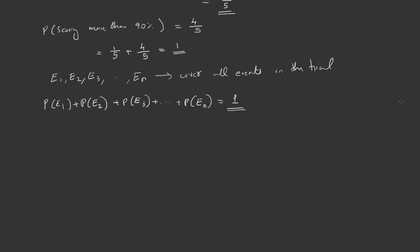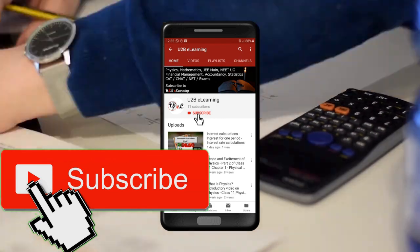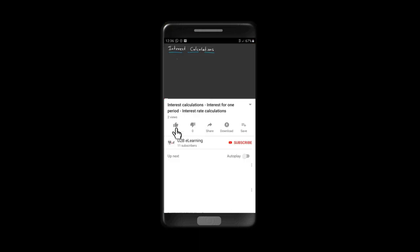So in this video, we completed the whole theory part for Class 9 Mathematics, Chapter 15, Probability. Thank you for watching this video. Keep learning. If you are not yet subscribed to our channel, please subscribe. Also, please like and share this video.